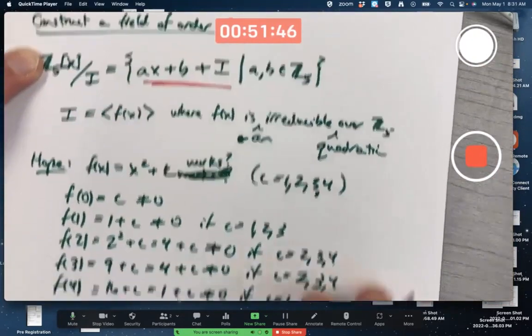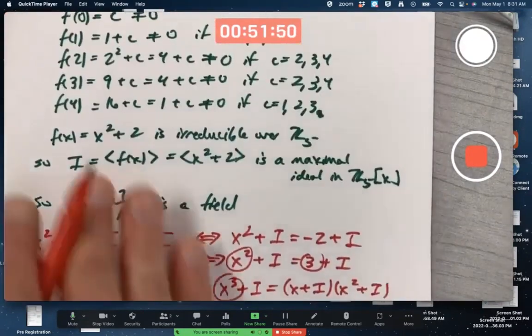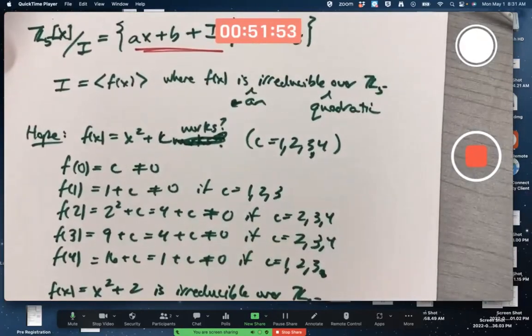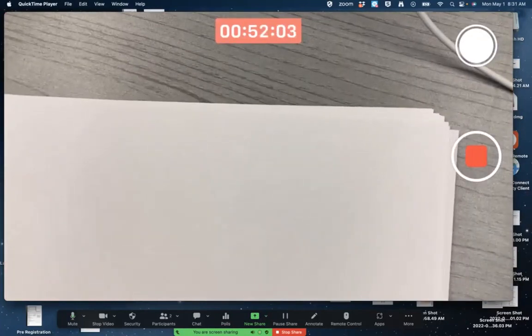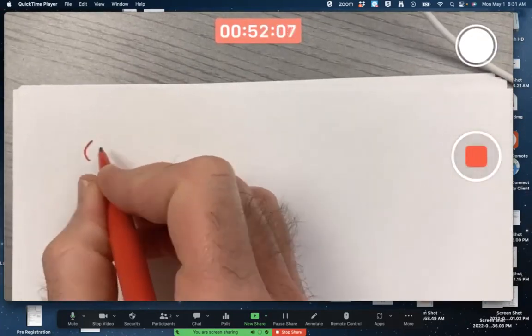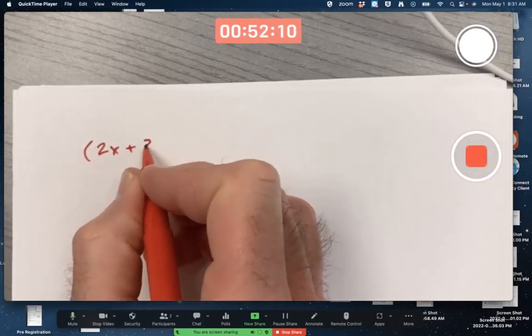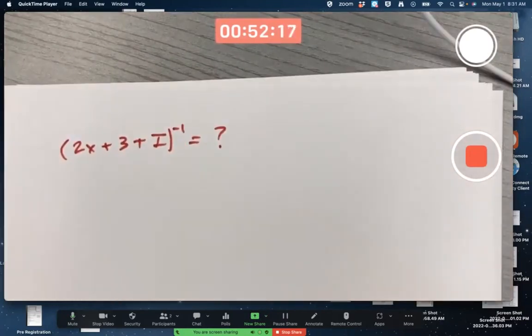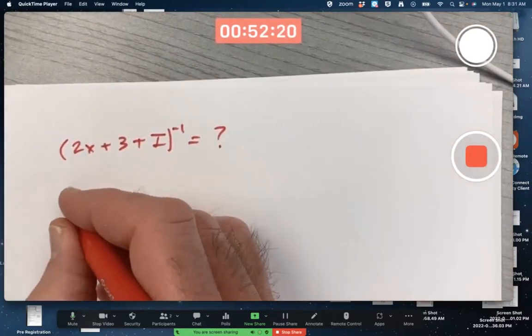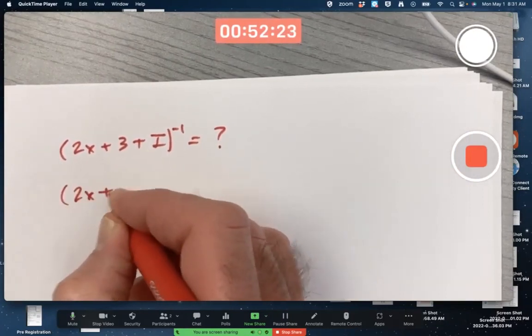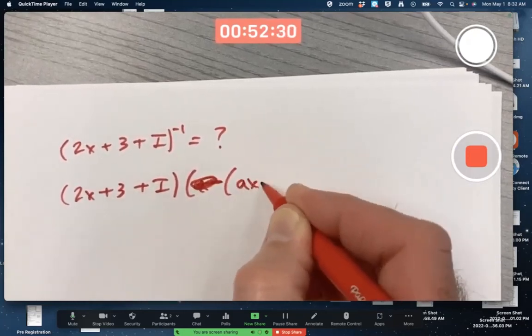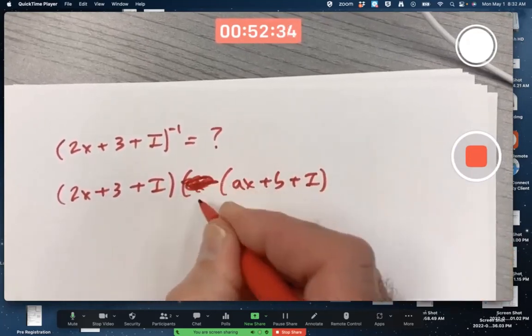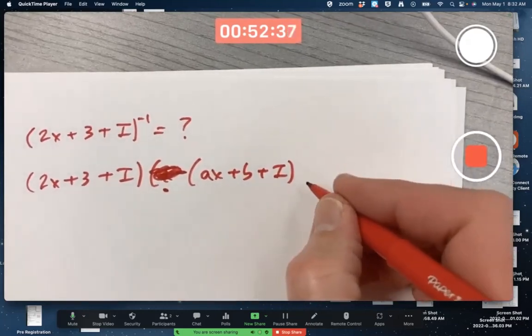You have to do this for the exam, probably not completely from scratch without hints. But once you got this as a field, you should also be able to do calculations in it. For example, you should be able to find the multiplicative inverse of some element. So we're wondering what the multiplicative inverse of 2x plus 3 plus I is. We've done this kind of thing before. You don't know what it is offhand, but you should be able to calculate it.